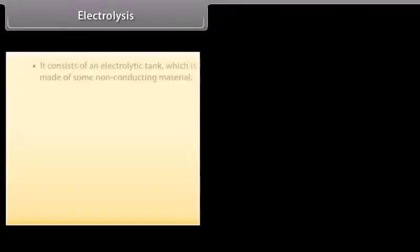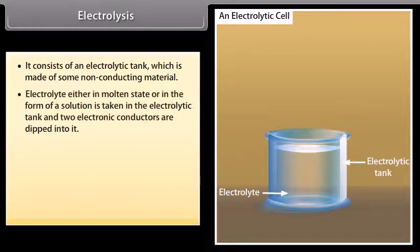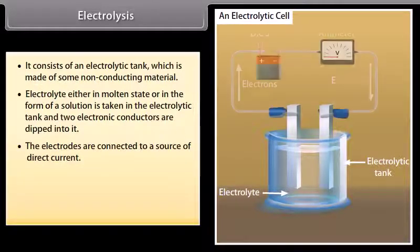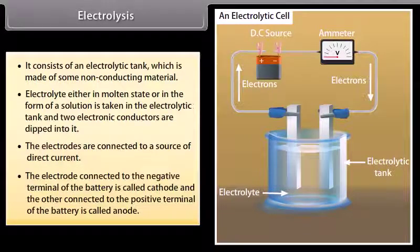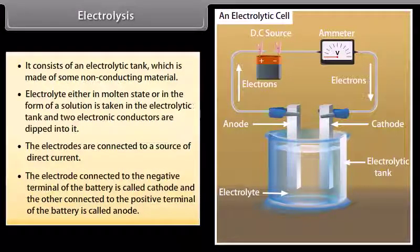It consists of an electrolytic tank which is made of some non-conducting material. Electrolyte, either in molten state or in the form of a solution, is taken in the electrolytic tank. Two electronic conductors are dipped into it. The electrodes are connected to a source of direct current. The electrode connected to the negative terminal of the battery is called cathode, and the other connected to the positive terminal of the battery is called anode.